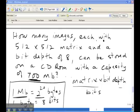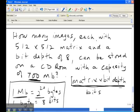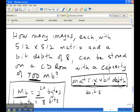Let's do a typical memory calculation problem. How many images, each with 512 by 512 matrix and a bit depth of 8, can be stored on a CD-ROM with a capacity of 700 megabytes? The two relationships that we must remember are that 1 megabyte is equal to 2 to the power of 20 bytes and that 1 byte equals 8 bits. Also, should recall that the memory required to save any image is the matrix multiplied by the bit depth. And that will give us an answer in bits.